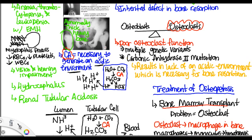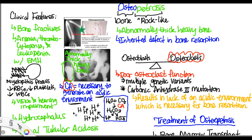In summary, osteopetrosis is an inherited defect of bone resorption that results in abnormally thick, heavy bone that fractures easily, due to poor osteoclast function. This may be due to multiple genetic variants, including the carbonic anhydrase 2 mutation leading to loss of the acidic environment required for bone resorption. Clinical features include bone fracture, anemia, thrombocytopenia, and leukopenia with extramedullary hematopoiesis due to the bony replacement of the marrow — the myelophthisic process — as well as vision and hearing impairment, hydrocephalus, and renal tubular acidosis. Treatment is bone marrow transplant.